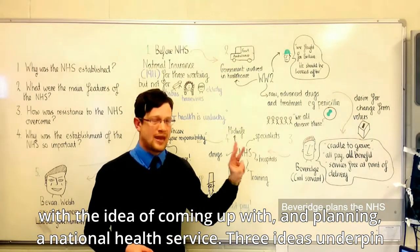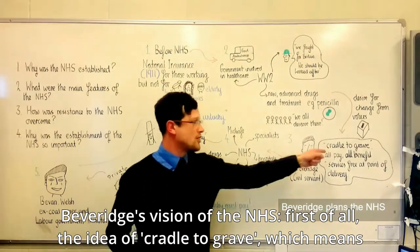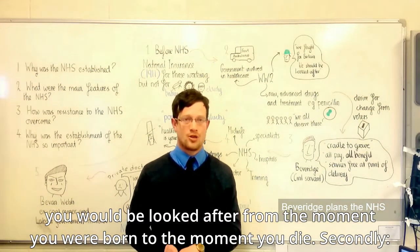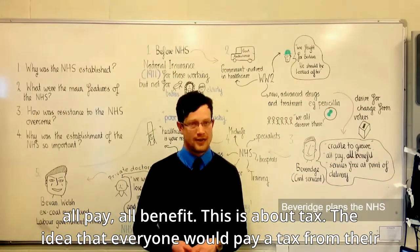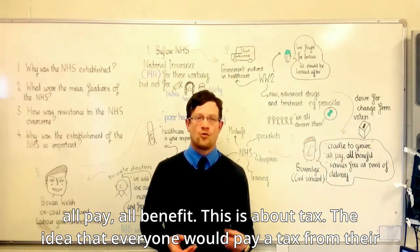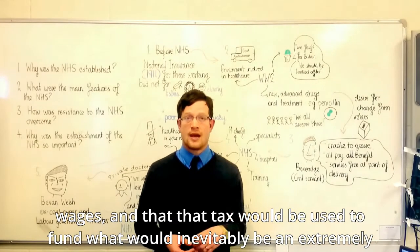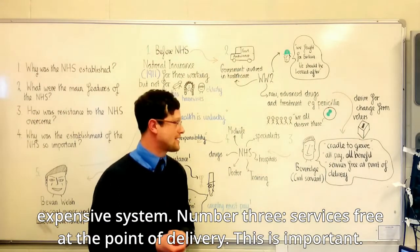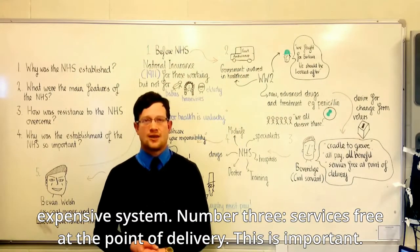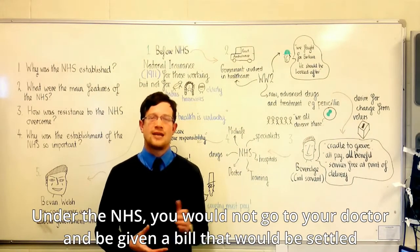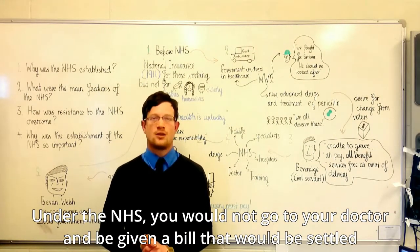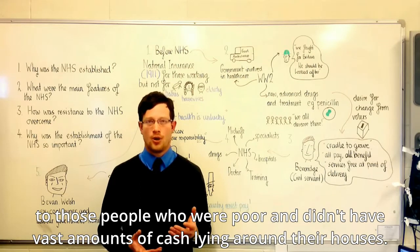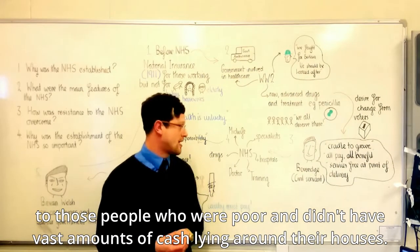Three ideas underpin Beveridge's vision for the NHS. First, the idea of cradle to grave — you would be looked after from the moment you were born to the moment you died. Second, all pay, all benefit — the idea that everyone would pay a tax from their wages, and that tax would fund what would inevitably be an extremely expensive system. Third, services free at the point of delivery. Under the NHS, you would not go to the doctor and be given a bill. The treatment would be free — enormously attractive to people who were poor and didn't have vast amounts of cash.